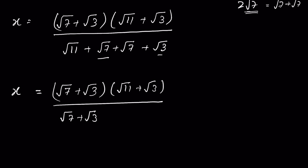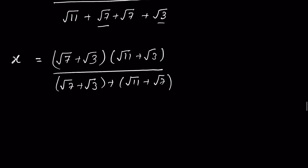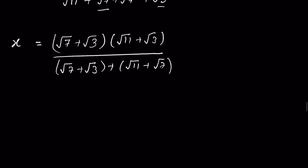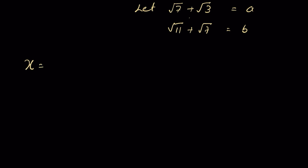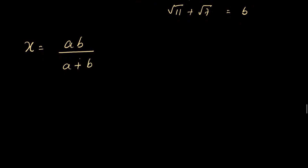Let us set a = √7 + √3 and b = √11 + √7. Then x equals a·b upon (a + b).